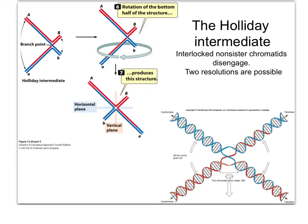The next step is this Holliday Intermediate — named after Dr. Holliday, who saw this happening, described it, talked about the resolution, and named it after himself. Again, two different kinds of pictures here. I like looking at the double helix better. They're just showing you opening it up so you can see what's inside — it's not what really happens in the cell. But depending on which strands are broken and rejoined tells you whether there's a crossing over event or not.